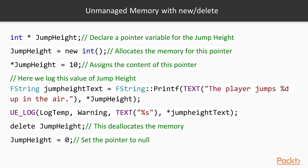Whenever you want to work with this pointer later, you just put it in an if statement to test whether the pointer is null or not. If it is not null, you can go ahead and work with it. This is how unmanaged memory works in C++, either by the new and delete operators or by the malloc and free functions.